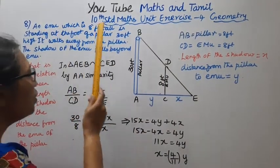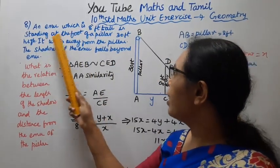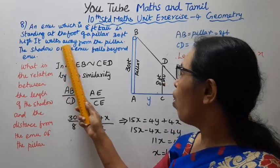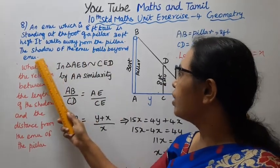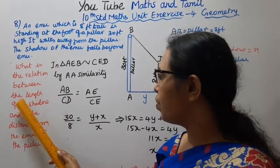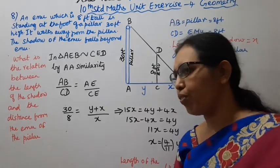An emu which is 8 feet tall is standing at the foot of a pillar 30 feet high. It walks away from the pillar. The shadow of the emu falls beyond emu. What is the relation between the length of the shadow and the distance from the emu of the pillar?